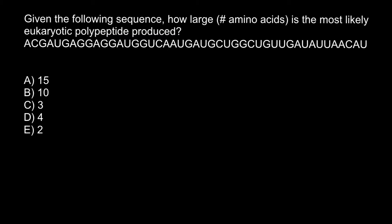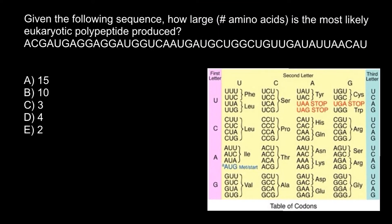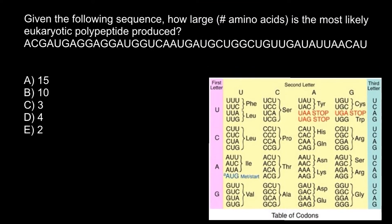...because each codon would code for one amino acid, your answer would be 15. But actually, what we have to do if you look at this codon table, you would find that amino acid production would start with...